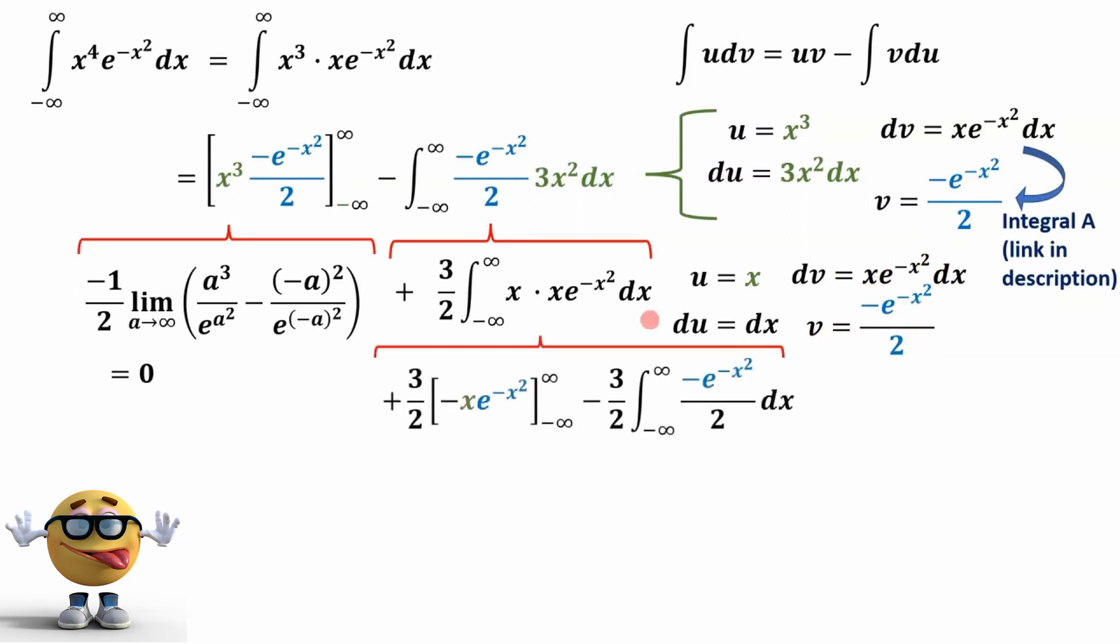So we can substitute that in using integration by parts. uv. This is our u, u is x here. And v is this part right here. I pulled this negative because this negative belongs to this, but I just kind of yanked the negative out. We're going to go from negative infinity to infinity. And then minus the three halves is still coming along for the ride. And then the integral of v, this is our v. And du, in this case, is dx right here.